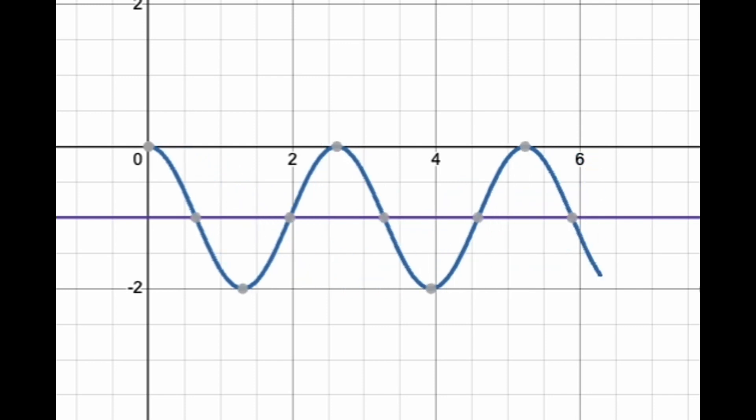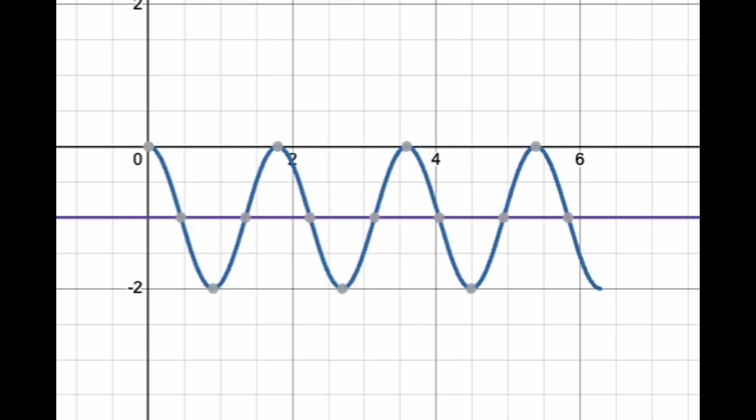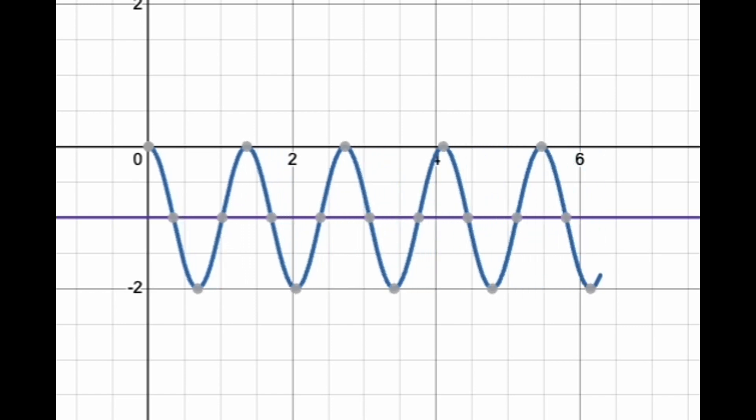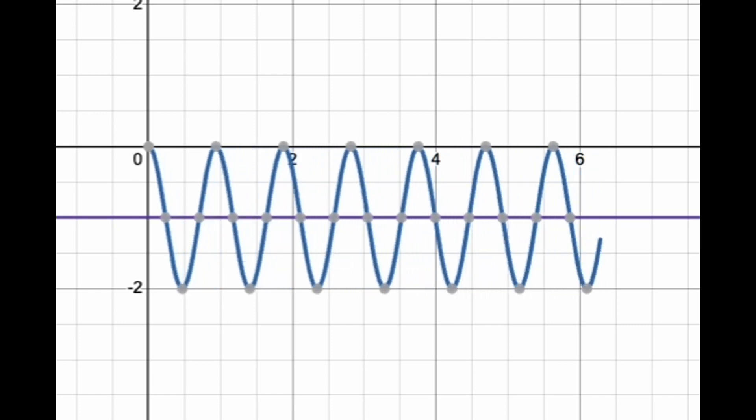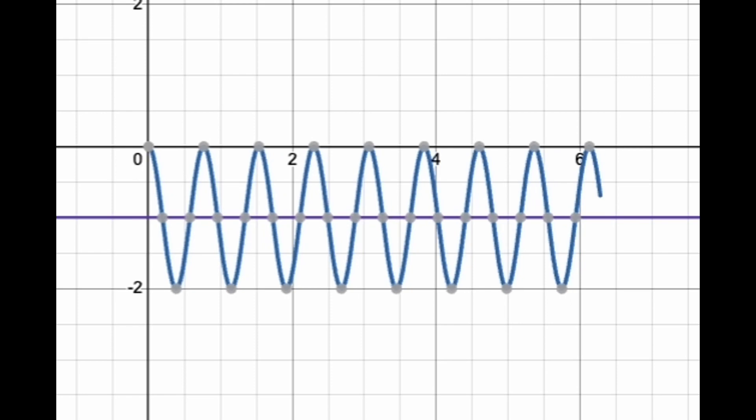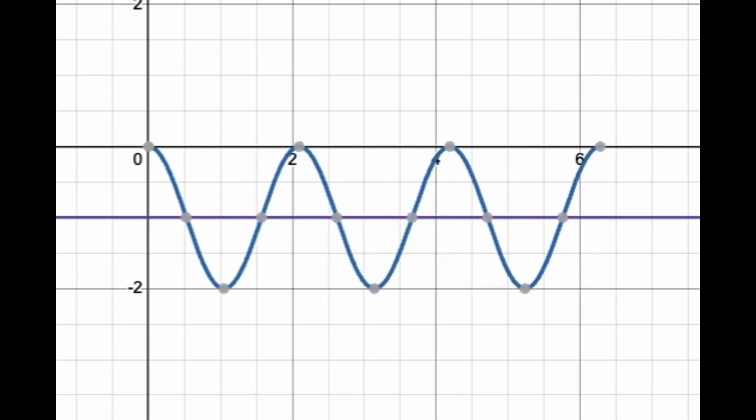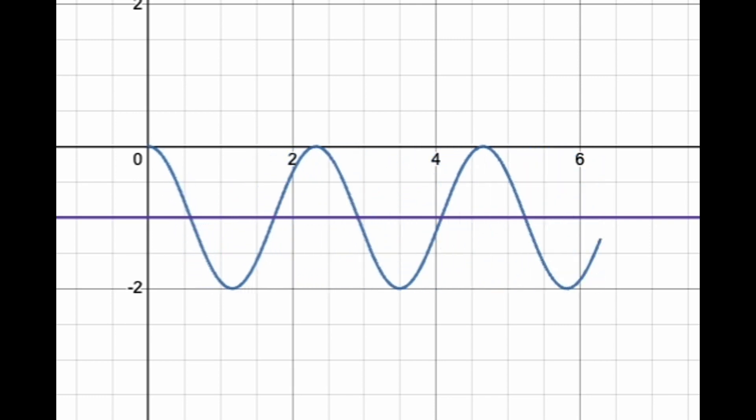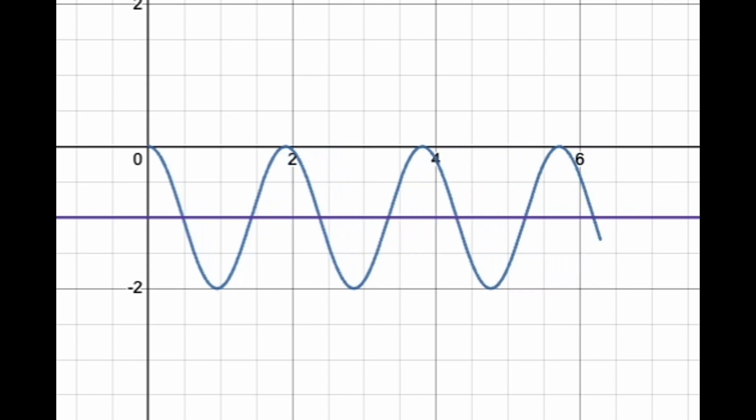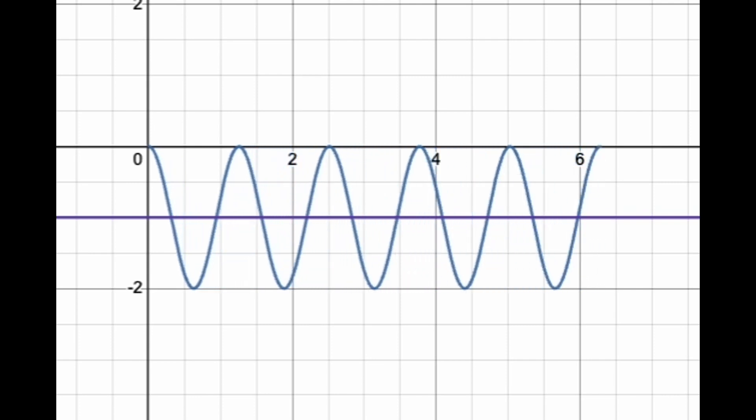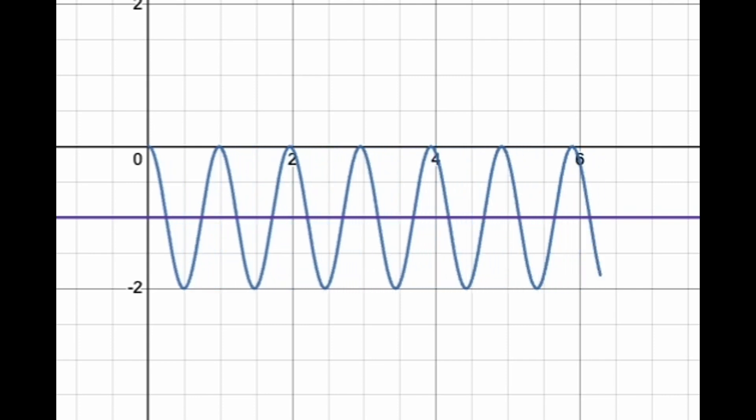That's how ω affects the scaling factor on the x direction. When ω is bigger, you have a higher frequency, you squeeze the curve. When ω is smaller, you spread it out. Ω will determine the period or the frequency of the cosine wave.